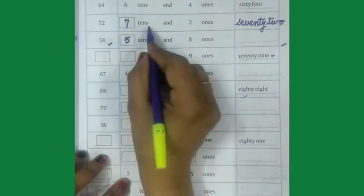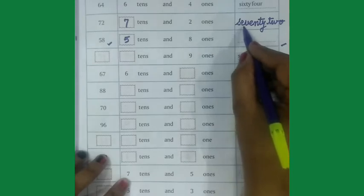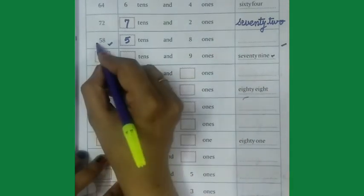Come on number 2, 72, 7 tens and 2 ones. We will write number name S-E-V-E-N-T-Y-70-T-W-O-2.